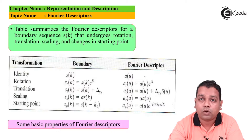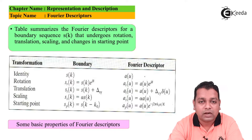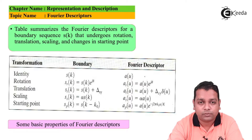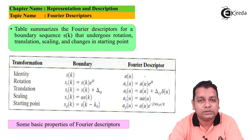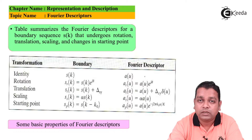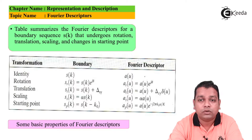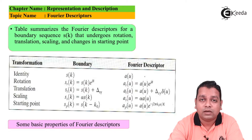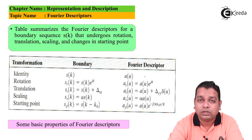For scaling, the boundary is s_s(k) = α·s(k), and for the starting point case s_p(k) = s(k − k_0). The corresponding Fourier descriptors are: a(u) for identity; a_r(u) = a(u)·e^{jθ} for rotation, as just shown.